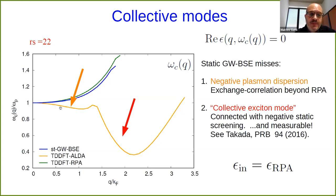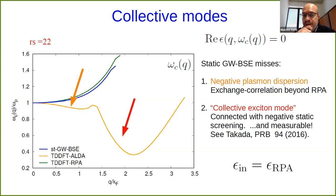The first missed feature is the negative plasma dispersion — at small momentum transfers the plasma should disperse with a negative slope, contrary to the RPA — and the Bethe-Salpeter equation is not able to reproduce this. The second missed feature is a large, widely dispersing feature at large momentum transfer and small energies, which is the collective exciton mode shown in the spectra earlier. This is connected to the negative static screening, and it should be measurable as peaks in the dynamical structure factor. The BSE completely misses this feature because we use a screened Coulomb interaction based on the RPA, which is itself poor for low densities and large momentum transfer.